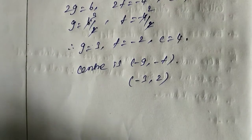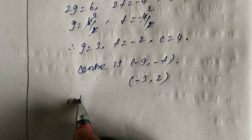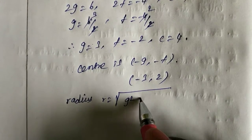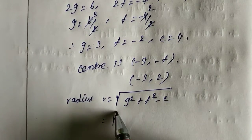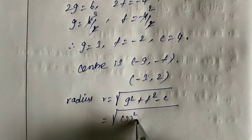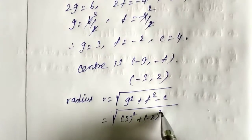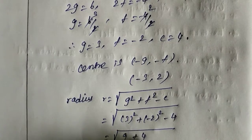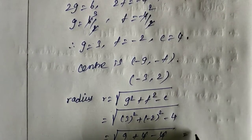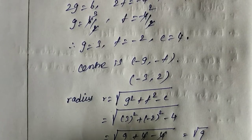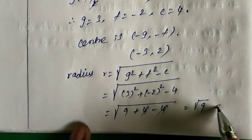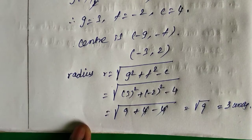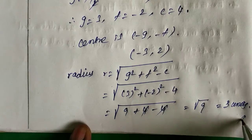Next, find the radius. Radius r equals square root of g squared plus f squared minus c. So square root of 3 squared plus minus 2 squared minus 4. That gives square root of 9 plus 4 minus 4. The minus 4 cancels, giving square root of 9, which equals 3 units. That's all for center and radius of the second subdivision.